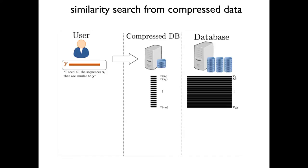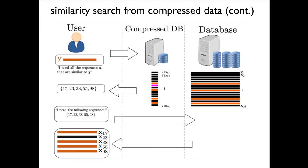What we wanted to do is understand how you can compress this big database down to a much more modest one that comprises signatures extracted from the large database. These signatures you are going to use for doing the similarity search. The idea is that you take this query sequence Y, and only on the basis of these signatures you get indications — candidates for similarity. Only those candidates that gave you sequences that are candidates for similarity, you will make the effort of going to the original big database and retrieving them to see whether they are indeed as similar as you were hoping.